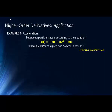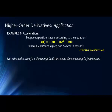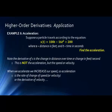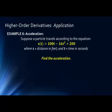So let's look at a kind of a science-y problem: acceleration. Suppose a particle travels according to the equation s(t) = 100t - 16t² + 200, where s = distance in feet and t = time in seconds. Find the acceleration. Note the derivative of s is the change in distance over time. Or in this problem, it's the change in feet per second. This is not the acceleration, but the speed or the velocity. When we accelerate, we increase our speed. So acceleration is the rate of change of speed or velocity, or the derivative of velocity, which is the second derivative of distance.